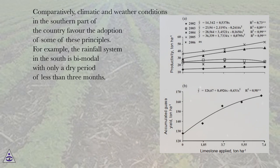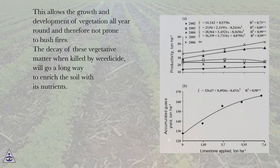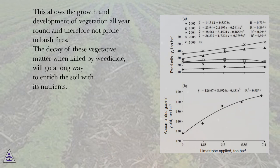Comparatively, climatic and weather conditions in the southern part of the country favor the adoption of some of these principles. For example, the rainfall system in the south is bimodal with only a dry period of less than three months. This allows the growth and development of vegetation all year round and therefore not prone to bushfires. The decay of vegetative matter when killed by weedicide will go a long way to enrich the soil with its nutrients.